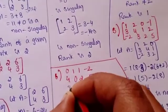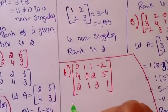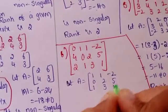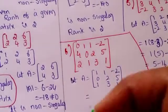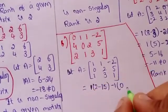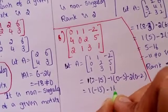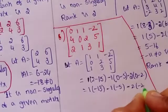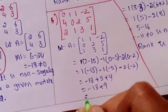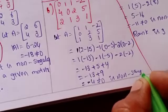For the sixth problem, the matrix is 0, 1, 1, minus 2 / 4, 0, 2, 5 / 2, 1, 3, 1. I remove the first column to get A equal to 1, 1, minus 2 / 0, 2, 5 / 1, 3, 1. The determinant is 1 into (2 minus 15) minus 1 into (0 minus 5) minus 2 into anything = minus 13 plus 5 plus 4 = minus 4, which is not equal to 0, so non-singular and the rank is 3.